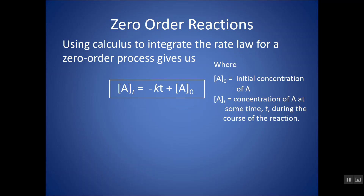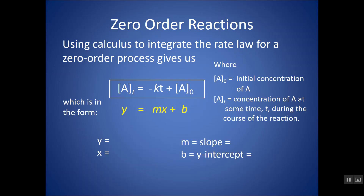The importance of this is that it fits the Y equals MX plus B form. If you have a zero-order reaction, when you plot the concentration at a certain time on your Y axis versus time on your X axis, you should get a straight line if the reaction is zero-order with respect to reactant A. If it's not zero-order, then it won't fit this integrated rate law, so you're not going to get a linear or straight line.